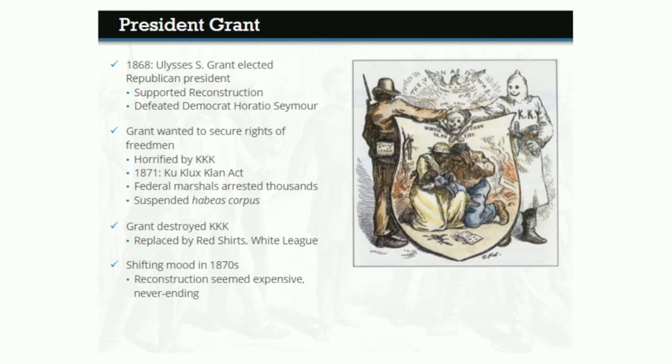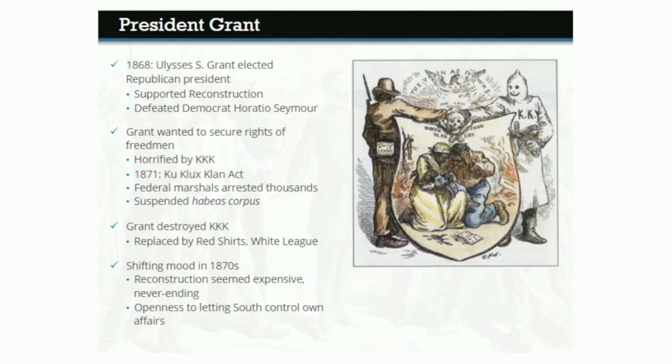Trying to conquer and reform the South at gunpoint had consumed the Union for more than a decade. Many Northerners had simply grown weary of the struggle and believed Reconstruction had been accomplished as well as it possibly could be under the circumstances. Despite the violent resistance to Reconstruction, these Republicans became open to letting Southerners once again control their own affairs, regardless of the consequences for civil rights. Although President Grant never truly held this belief, much of the air was let out of Reconstruction during his presidency.